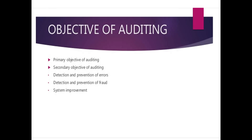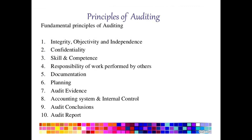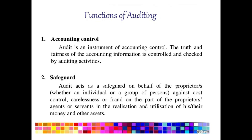The objectives of auditing include a primary objective and a secondary objective. The secondary objective covers detection and prevention of errors, detection and prevention of frauds, and system improvement. The principles of auditing include integrity, objectivity, independence, confidentiality, skill, competence, responsibility for work performed by others, documentation, planning, audit evidence, and accounting systems and internal control.